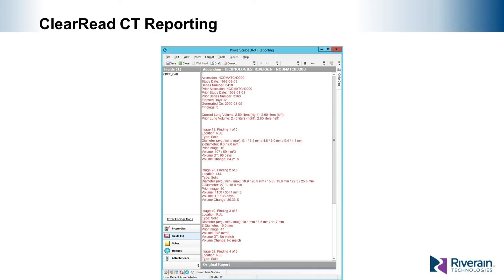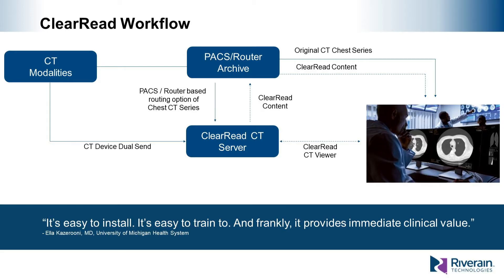Measurements and other study-specific information provided as part of the ClearRead CT Detect summary report can be incorporated in a customizable template for migration to Nuance's PowerScribe reporting system. Options for ClearRead CT workflow include a CT device dual send, where the original CT study is sent to both the ClearRead server and the PACS system simultaneously. An alternate workflow is to send the original CT series directly to PACS first and then route it to the ClearRead CT server. In either case, once the ClearRead applications are applied, the ClearRead content is sent back to PACS and inserted in the appropriate patient folder, then sent to the radiologist workstation for review.